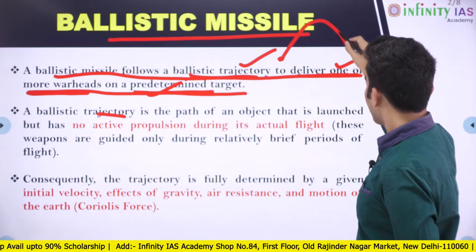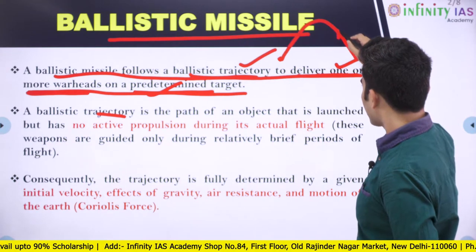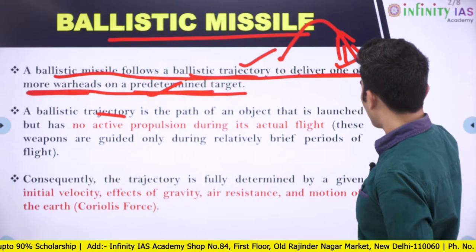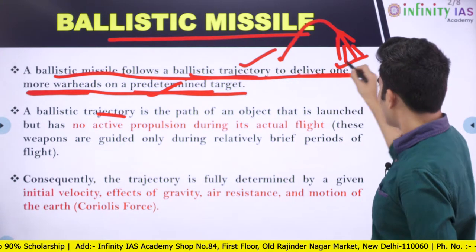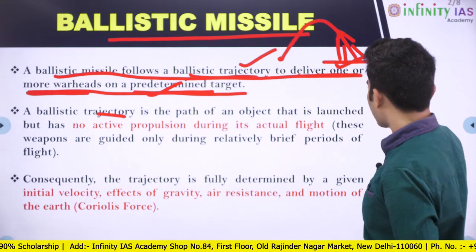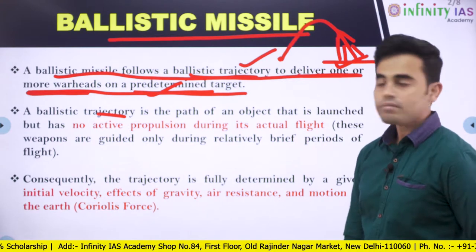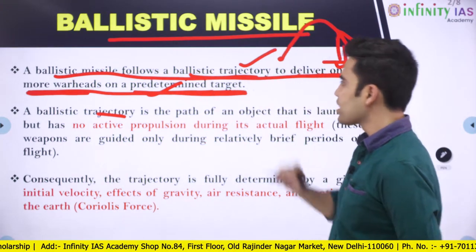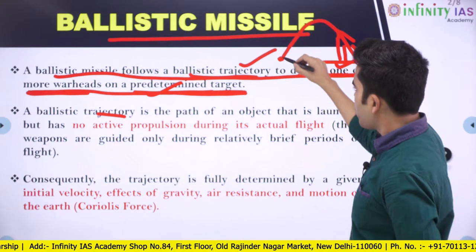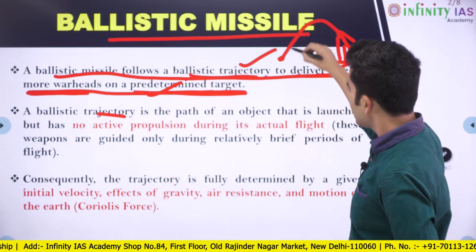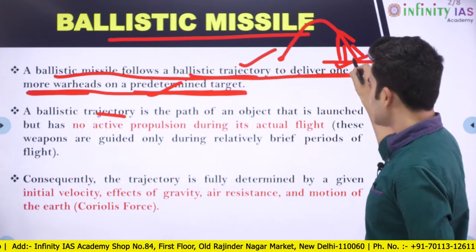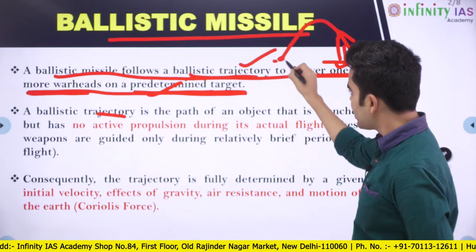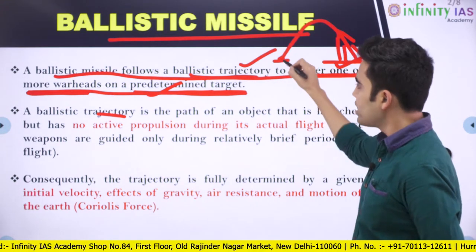After it re-enters the atmosphere, the missile can break down into three or four pieces so that it can attack a bigger area. A predetermined target means that once the missile is fired, we cannot change the target — it is already determined when it is fired.